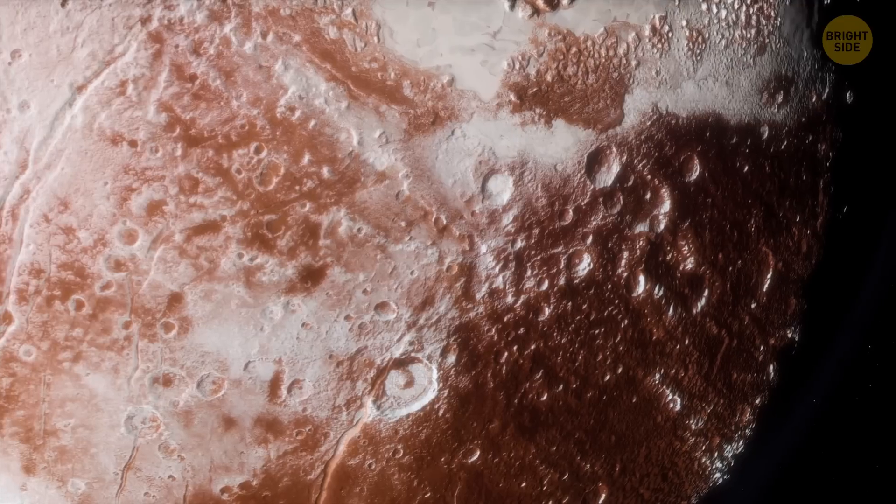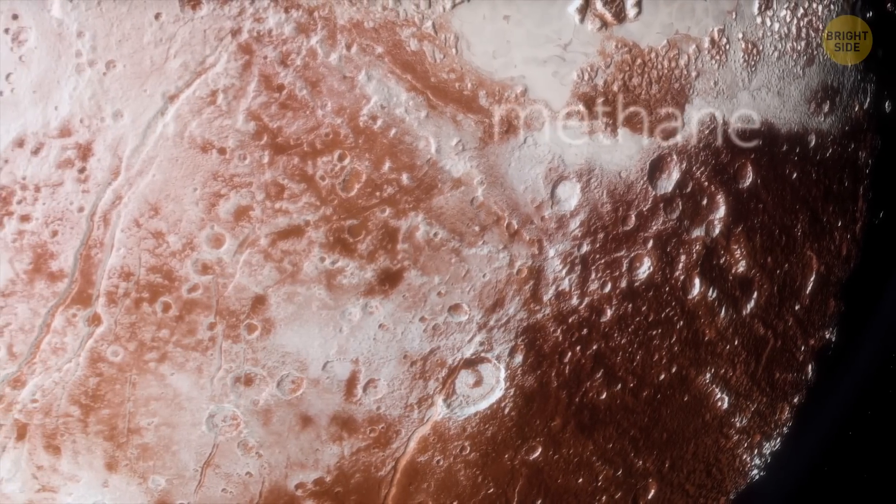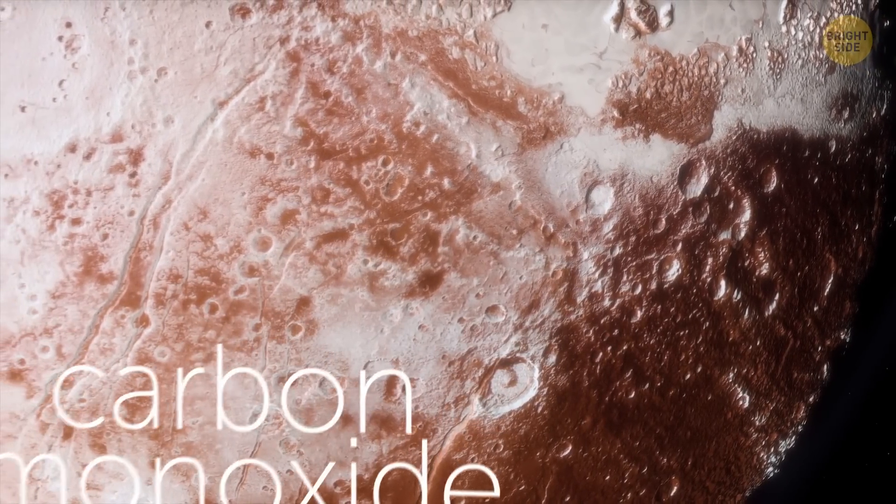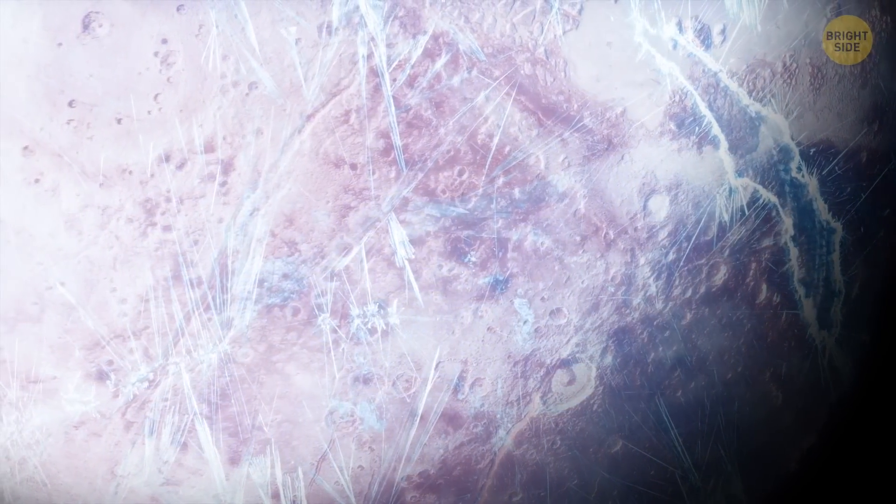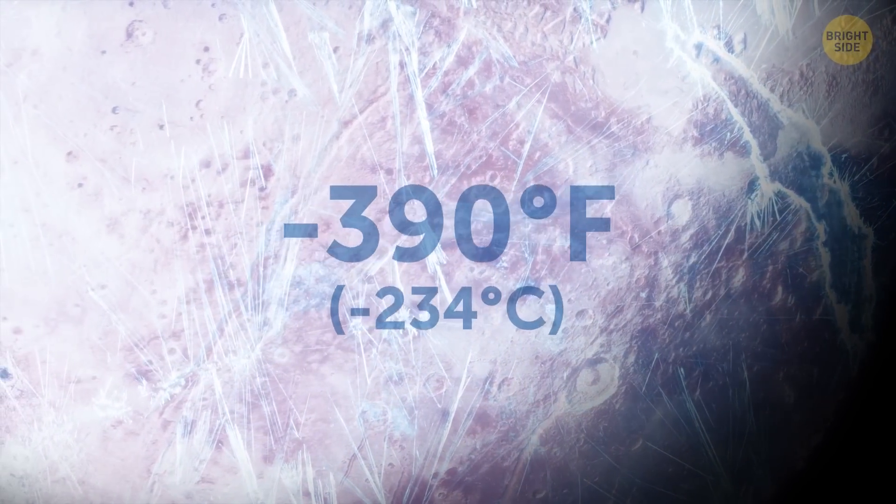Pluto's atmosphere is very thin and composed of nitrogen, methane, and carbon monoxide. Stinky. It's also very cold there, with average temperatures being around minus 390 degrees Fahrenheit.